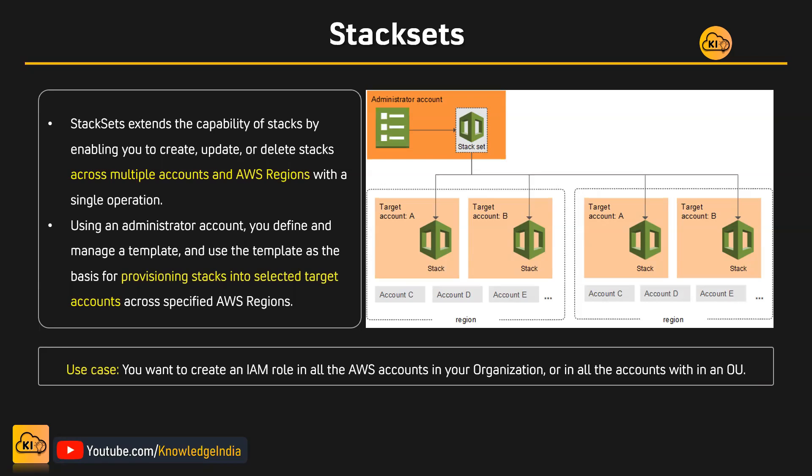As shown in this diagram, you can operate from one place. Suppose your organization has 10 AWS accounts — from one account, generally the master account, you can create your stack in multiple regions and multiple accounts. You choose which regions and which accounts you want to target. From one central place you can provision, and later when you want to modify or delete, you can do that from one place as well.